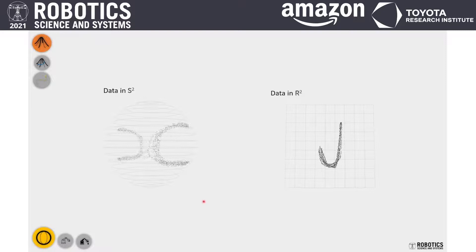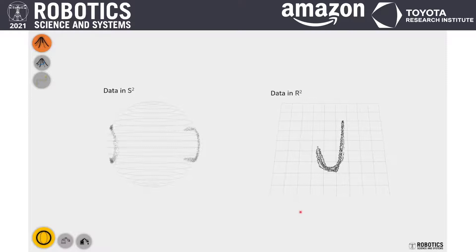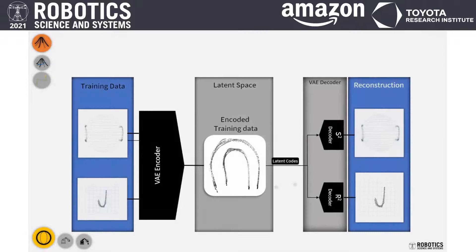In the toy example, the data is defined in R2 and S2, which is a simpler version of position and quaternion data in robotics. Data in S2 looks like a character C in an antipodal manner, and the data in R2 looks like character J on a 2D surface.